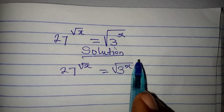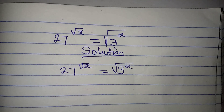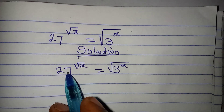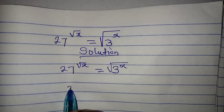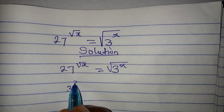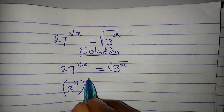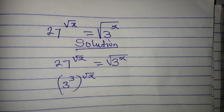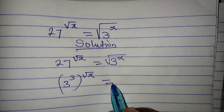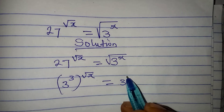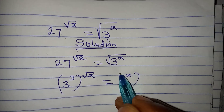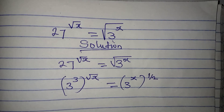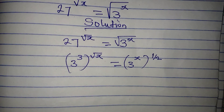First, I will remove the square root. Starting from the left: 27 is 3 to the power of 3, raised to the power of root x. On the right, we have 3 to the power of x, then to the power of 1 over 2, because of the square root.